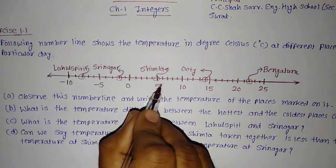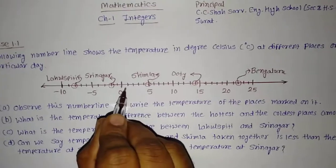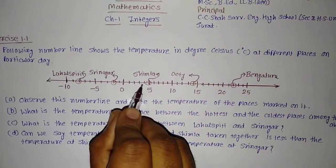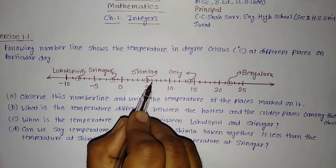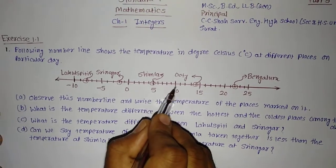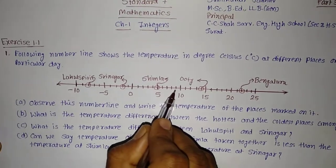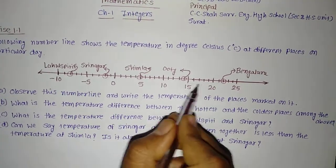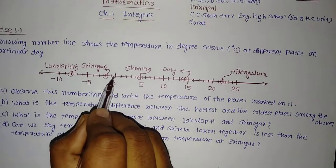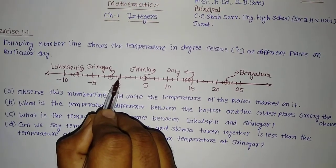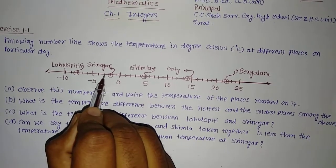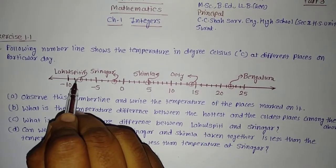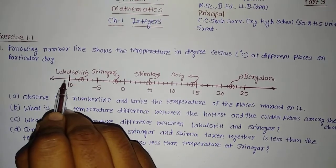The gap between 0 and 5 is 5, meaning each line is indicating 1, 2, 3, 4, and 5 — and this continues up to 10, 15, 20, and so on. Similar way, at the left hand side of 0, it is minus 1, minus 2, minus 3, minus 4, minus 5, minus 6, minus 7, minus 8, minus 9, and minus 10.